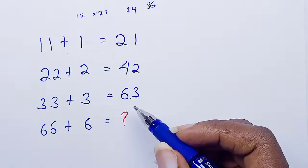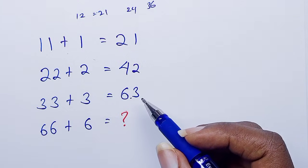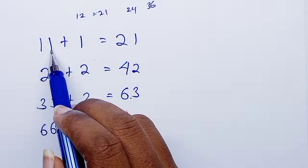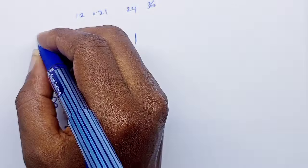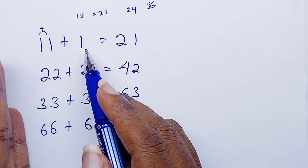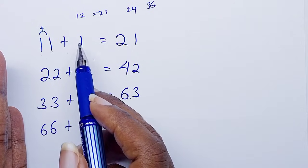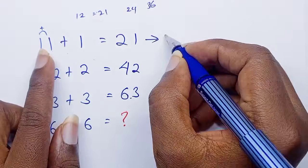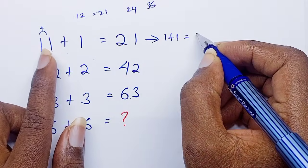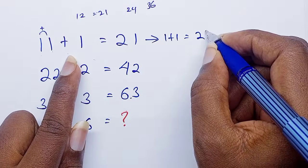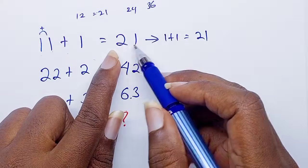So the other way, the right way, is you get this and add it to this. Add this one to this one. Then put it, the answer you get, you put it together with this second value. For instance, here you add 1 plus 1, which is equals to 2. Then you get the second value and place it there. That is how they got this 21.